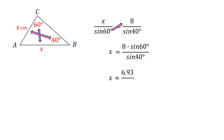Sine 40 degrees is 0.64. Be careful when using calculators — make sure it's in degree mode, not radian mode, or you'll get an incorrect value. Dividing 6.93 by 0.64 gives approximately 10.83. Since the unit given was centimeters, the final answer is x ≈ 10.83 cm.